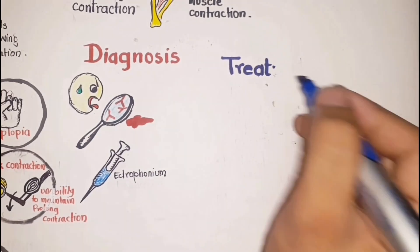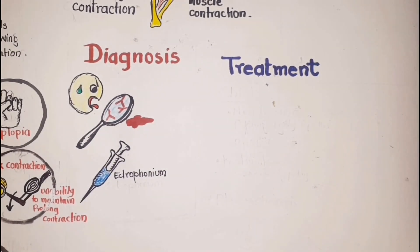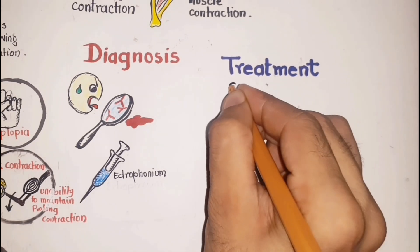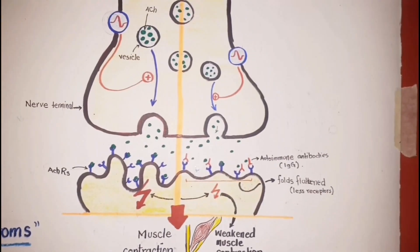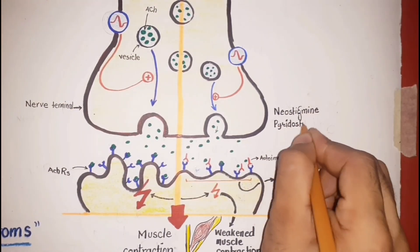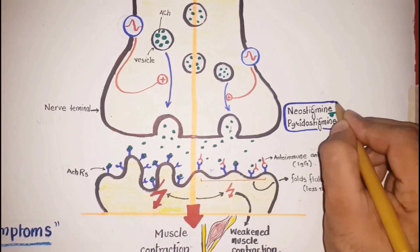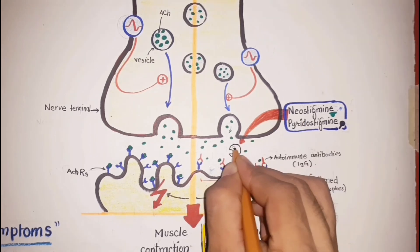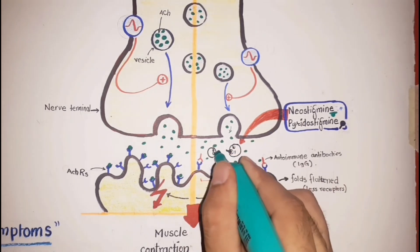There is no specific treatment of myasthenia gravis and it is treated symptomatically. For this purpose, the cholinesterase inhibitors such as neostigmine and pyridostigmine are used. These drugs inhibit cholinesterase which degrades acetylcholine in the synaptic cleft.